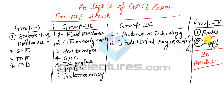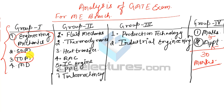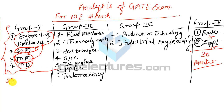After Group 4's 30 marks, you are left with 70 marks. Group 1 — Engineering Mechanics, Theory of Machine, Strength of Material, and Machine Design — all four subjects together contain 23 to 25 marks. There are variations between subjects depending on the exam.